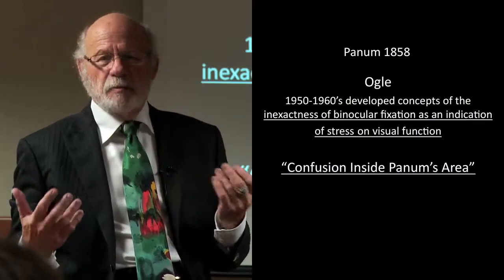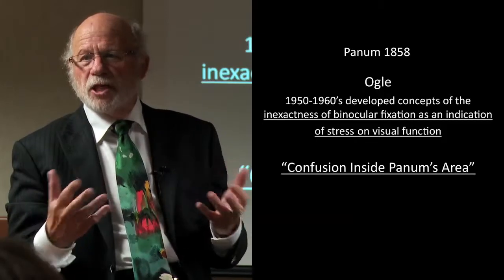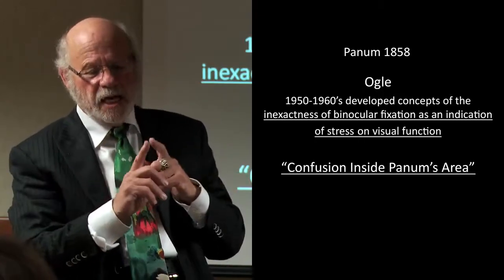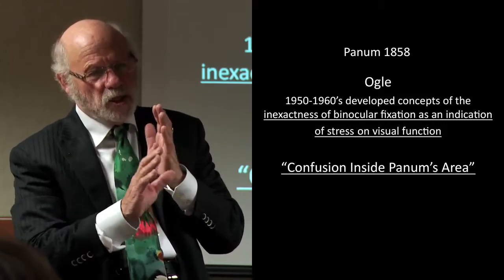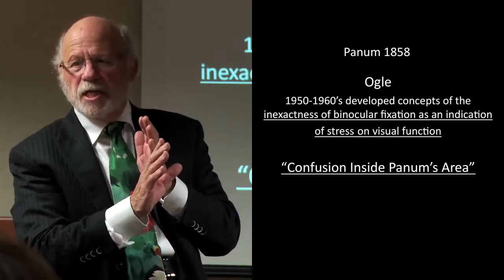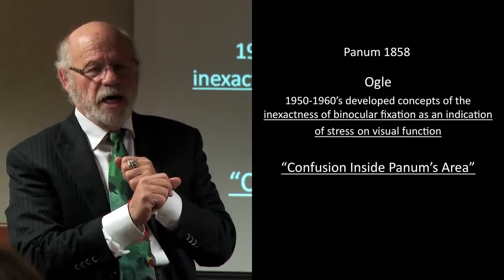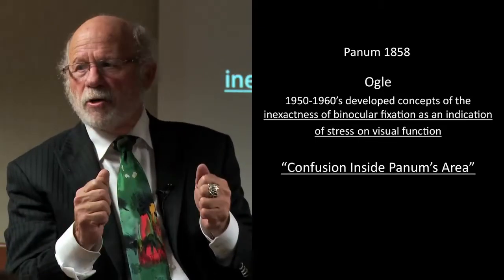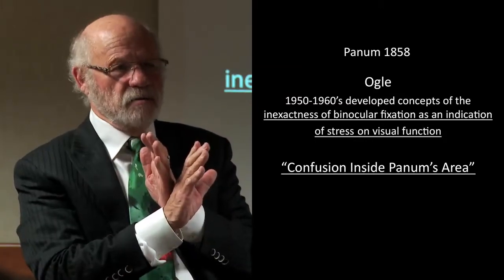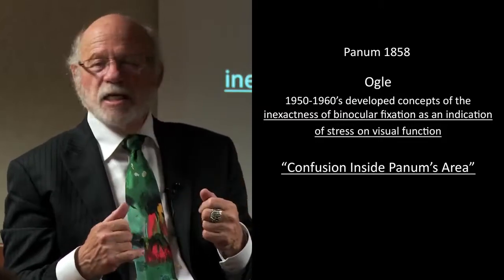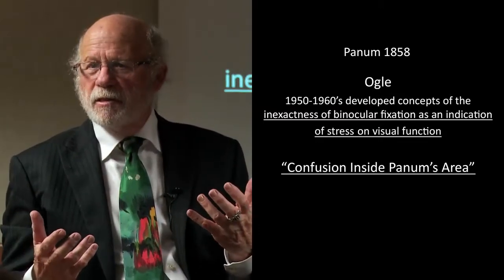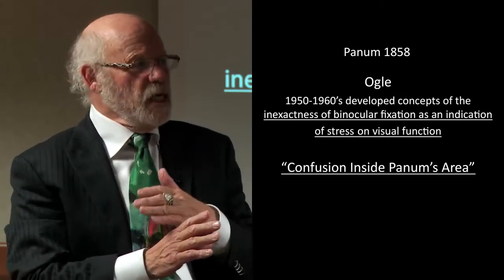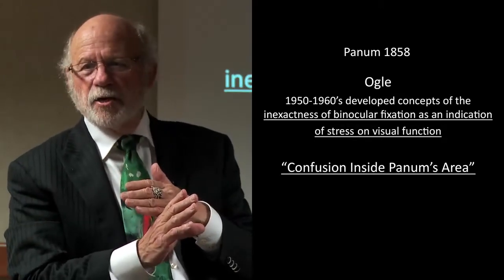This goes back to 1858 with Panum's discovery of Panum's area, then Ogle in the 1950s and 60s, who developed concepts of inexactness of binocular fixation and whether fixation disparity was an indication of stress in the binocular system. I called this paper 'Confusion Inside Panum's Area,' because before you develop double vision, you get a disparity occurring. It measures the argument before the breakup — the disparity causing all the symptoms — and we're not measuring it.